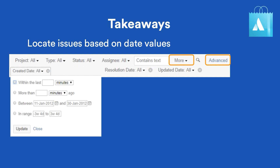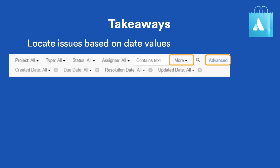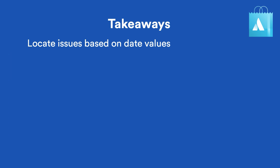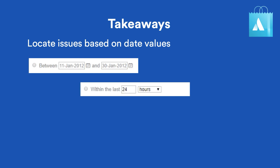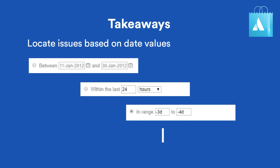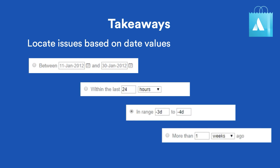There are two different ways to express dates and date ranges: searching with exact dates or searching with relative dates using units such as hours, days, and weeks.